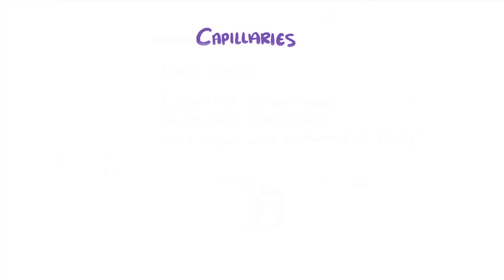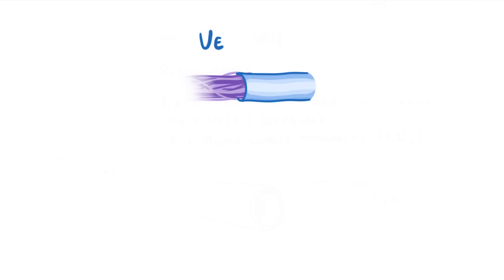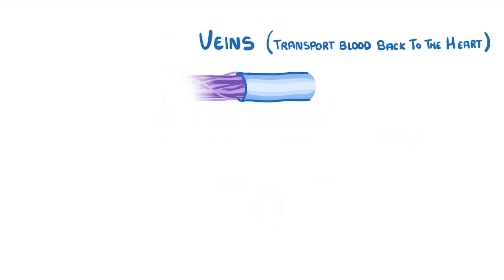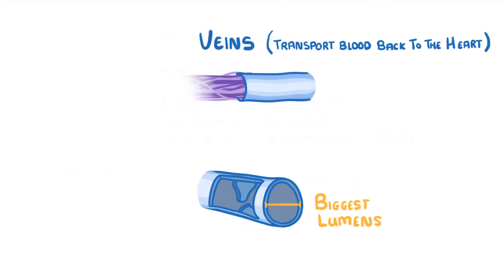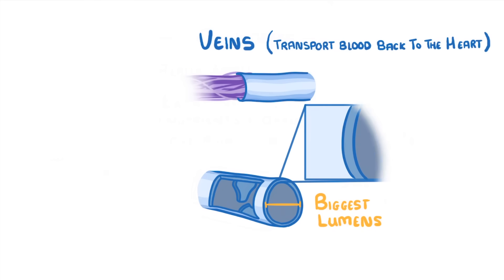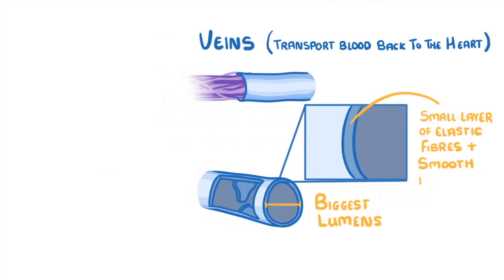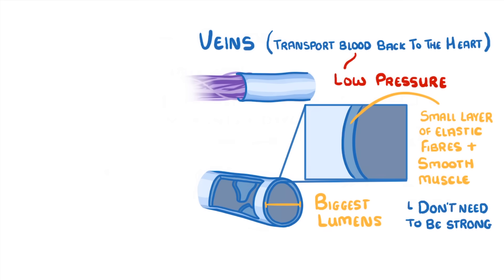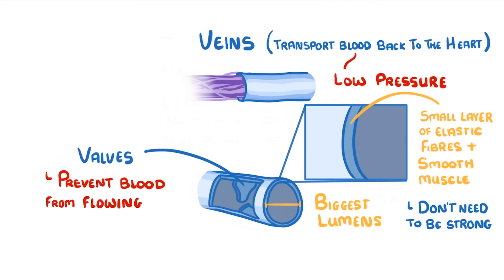Finally, these tiny capillaries start to join up into larger vessels called veins, which transport the blood back to the heart. Veins are relatively large, with by far the biggest lumens of any blood vessels. They also have relatively thin walls, with only small layers of elastic fibres and smooth muscle. This works fine though, because the blood that they carry is at very low pressures, so the walls don't need to be very strong. The important thing to remember about veins is that they have valves, which prevent blood from flowing backwards, ensuring that it always flows towards the heart.